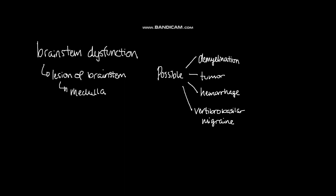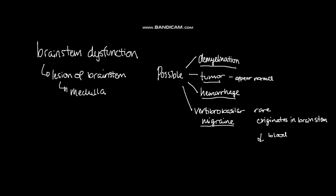Going through these possibilities: demyelination is a condition where the myelin sheath or protective covering of nerve fibers in the brain is damaged, causing neurological problems. A low-grade tumor is one where cells and tissues appear seemingly normal under a microscope. A small recurrent hemorrhage is the bursting of a blood vessel, and a vertebral basilar migraine is a rare type that originates in the brain stem, possibly caused by blood vessel constriction limiting blood flow to the brain.